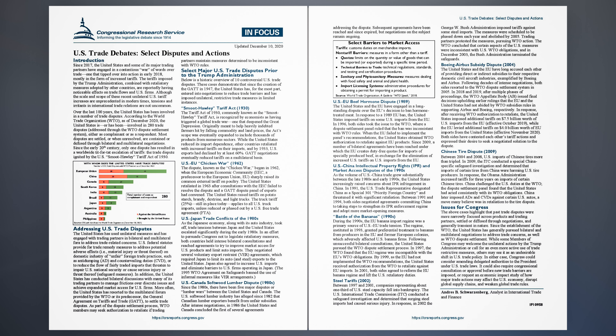Steel Tariffs, 2002: Between 1997 and 2001, companies representing about one-third of U.S. steel capacity fell into bankruptcy. The U.S. International Trade Commission (ITC) conducted a safeguard investigation and determined that surging steel imports had caused serious injury. In response, in 2002 the George W. Bush administration imposed tariffs against some steel imports. The measures were scheduled to be phased down each year and abolished by 2005. Trading partners protested the measures, pursuing WTO action. The WTO concluded that certain aspects of the U.S. measures were inconsistent with U.S. WTO obligations, and in December 2003, the Bush administration terminated the safeguards.